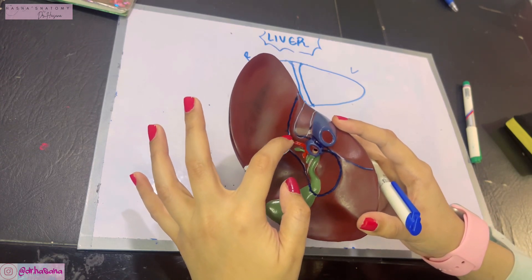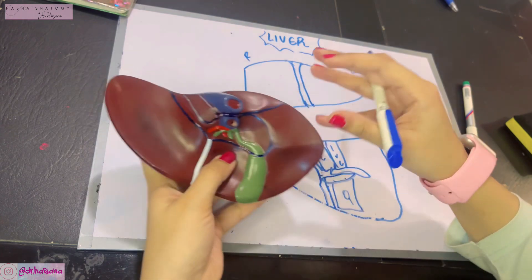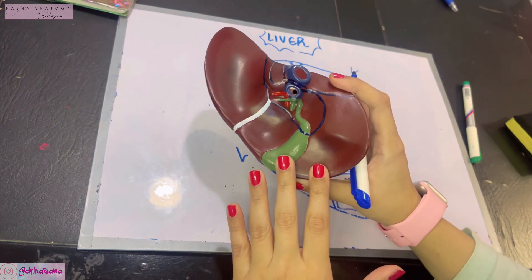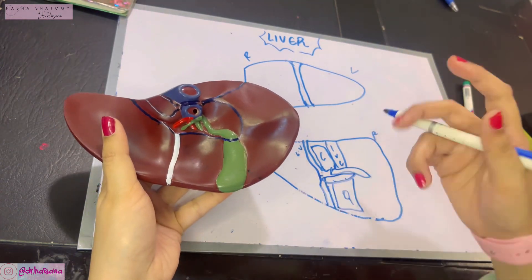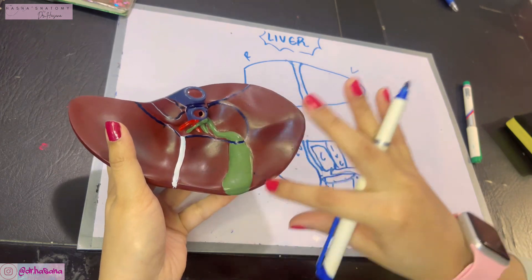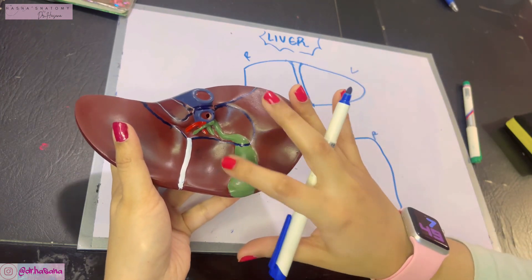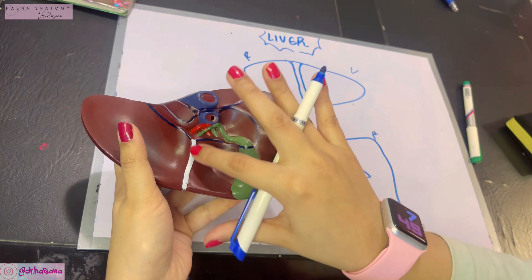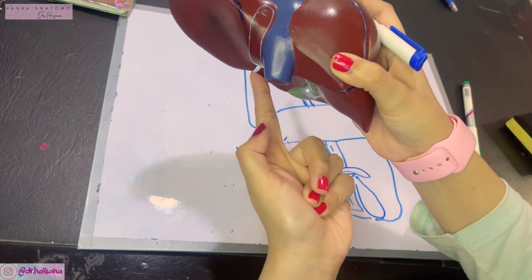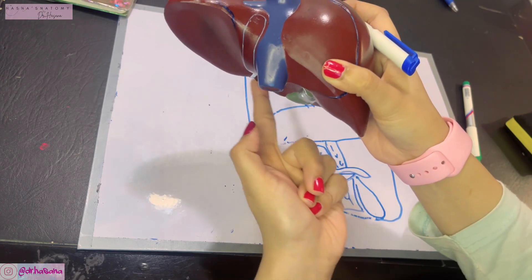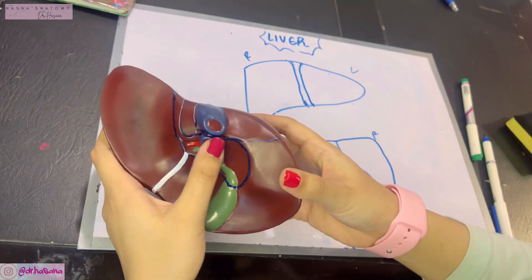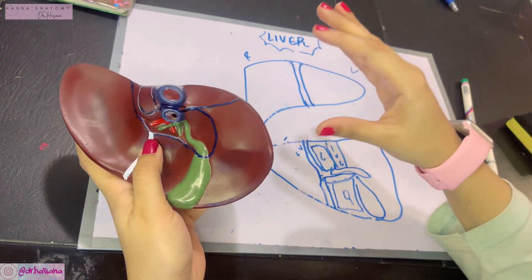The quadrate lobe lies on the inferior surface of the right lobe of the liver. To the right of the quadrate lobe lies the fossa for the gallbladder. To the left of the quadrate lobe is the ligamentum teres fissure. Anteriorly, the quadrate lobe's boundary is formed by the inferior border, and posteriorly it is bounded by the porta hepatis.